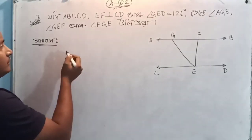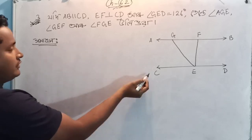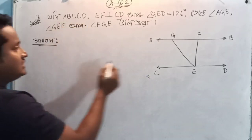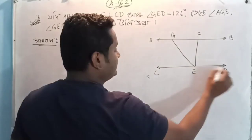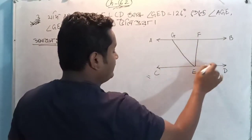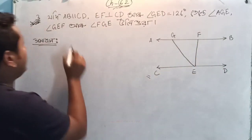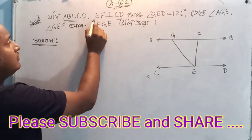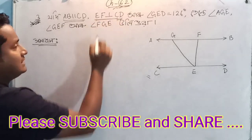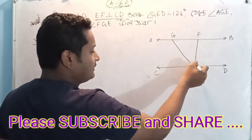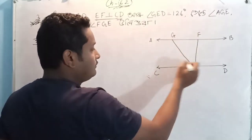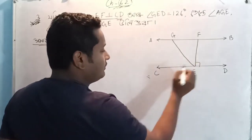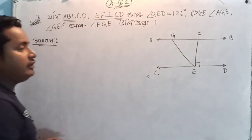So, I have a question. A, B, homontral C, D. Recha C, D. A, B, Recha C, D. EF is equal to EF. EF is equal to CD. It is equal to 90 degrees.